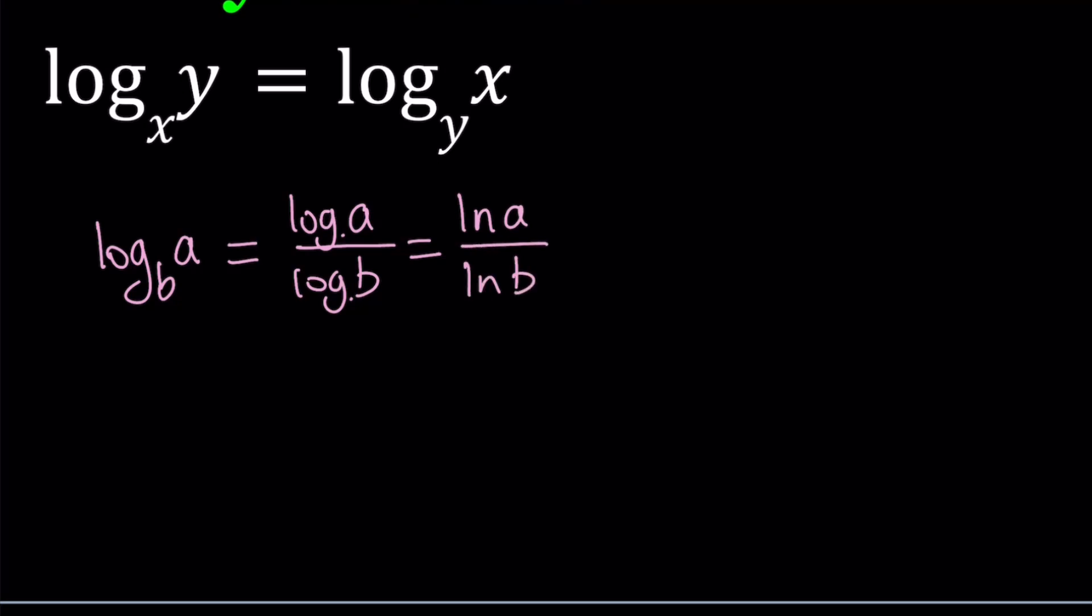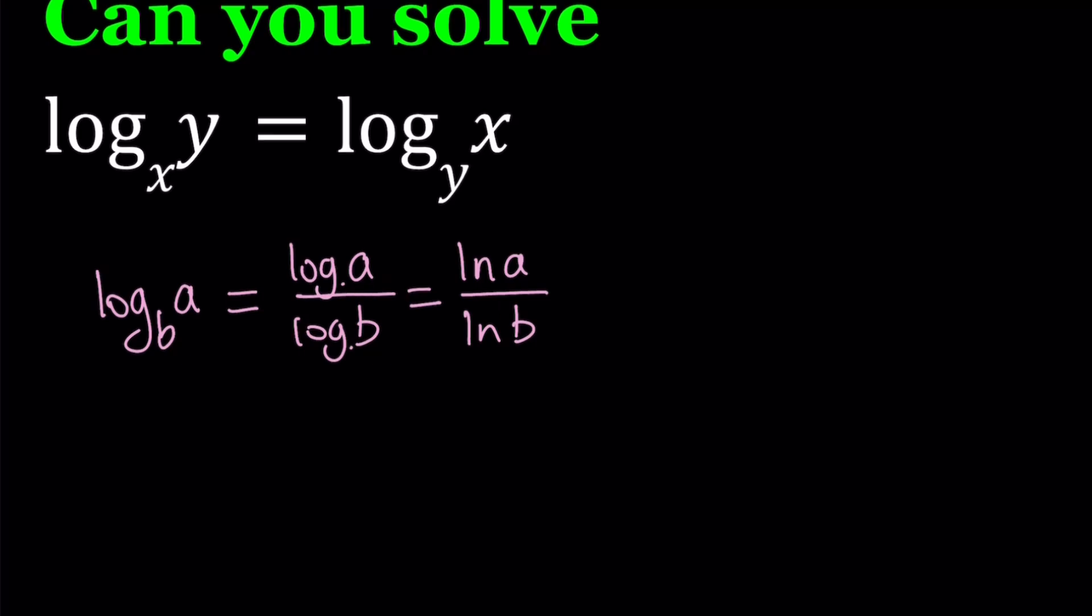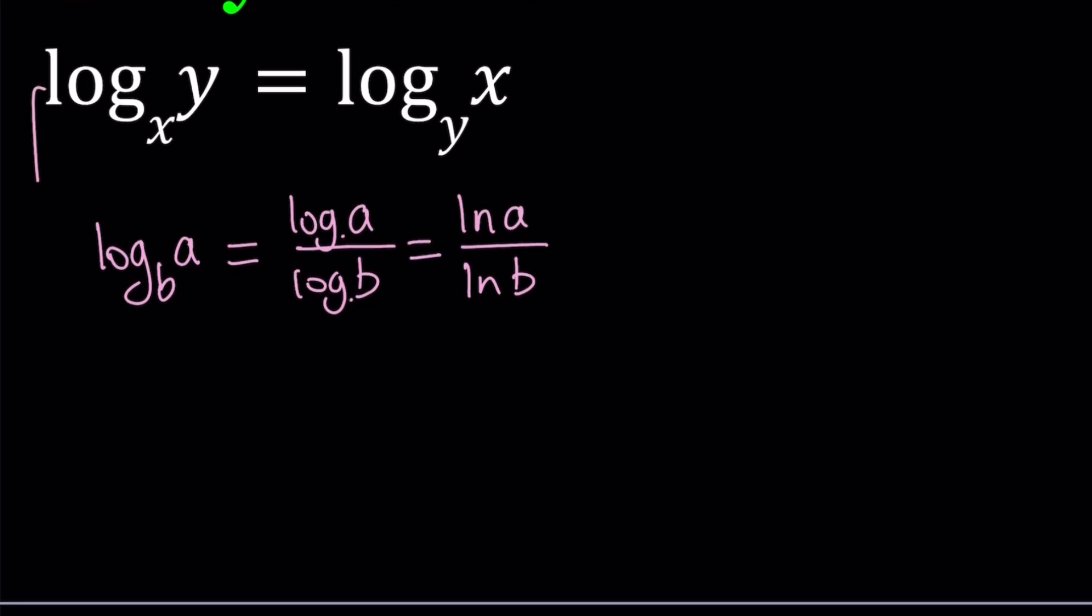A lot of times I use ln because that is convenient. It's easy to differentiate, so on and so forth. So let's go ahead and use base e, natural log, for this. We can write the first one as ln(y) / ln(x) equals the second one as ln(x) / ln(y).